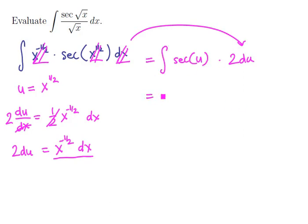So let's clean this up a little bit. We're going to have the integral of 2 secant of u du. Notice that the 2 is a constant, so it comes along for the ride. The antiderivative of secant is natural logarithm of the absolute value of secant of u plus tangent of u.